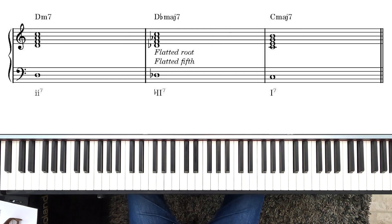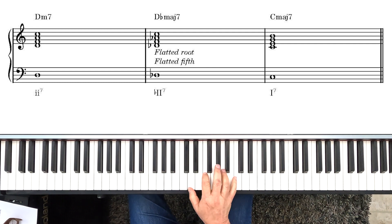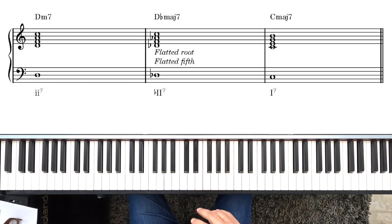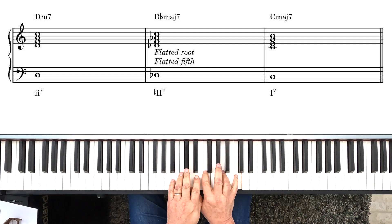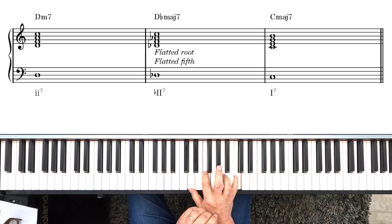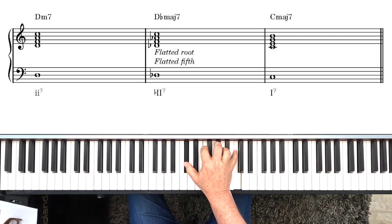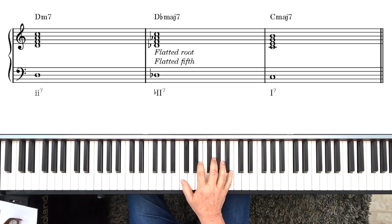Now we have one more alteration that we can do. We can flat both the root and the 5th. This creates a very strong downward motion. There's the root, there's the 5th. If we flat them both, we end up with this.